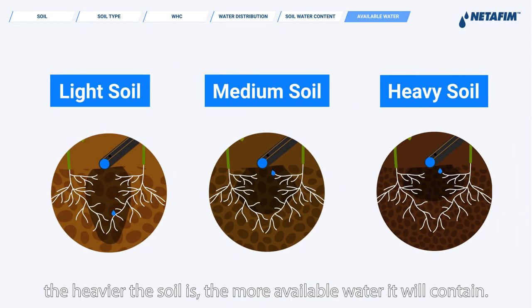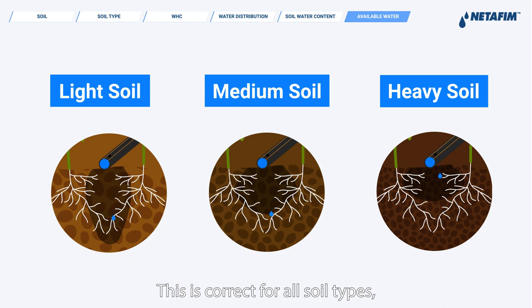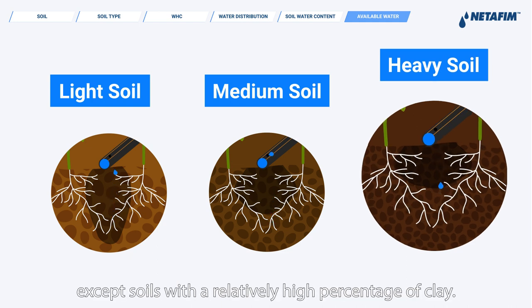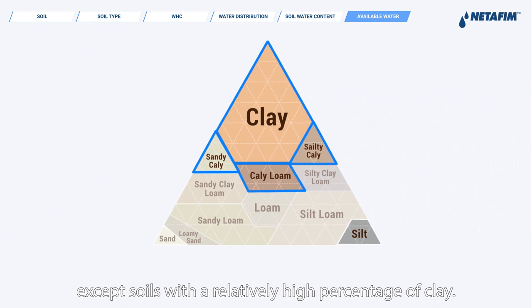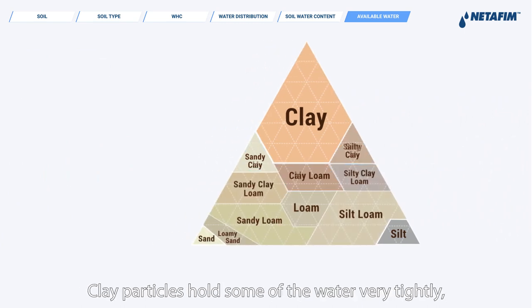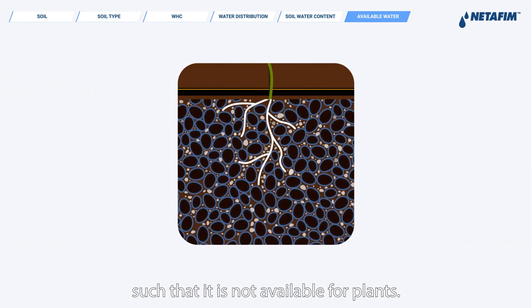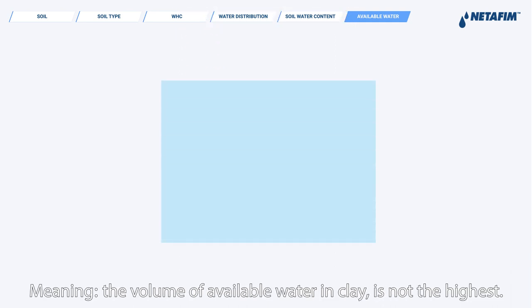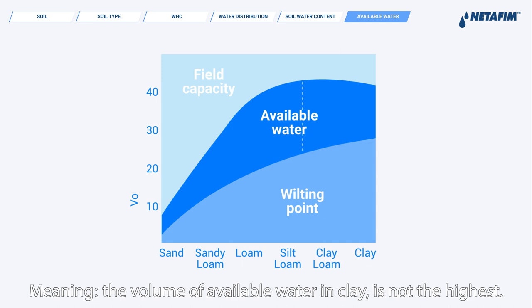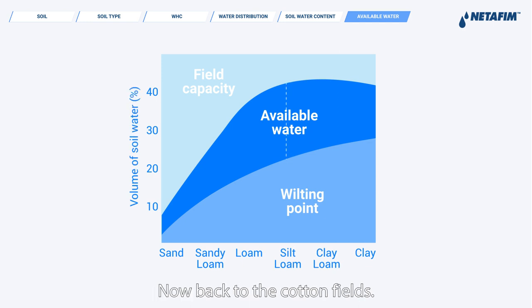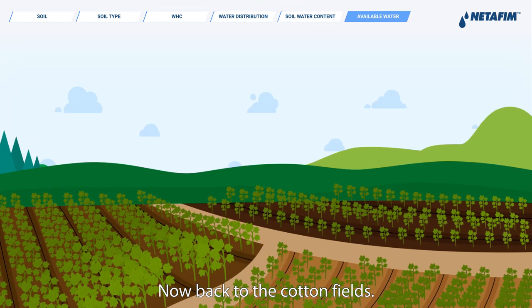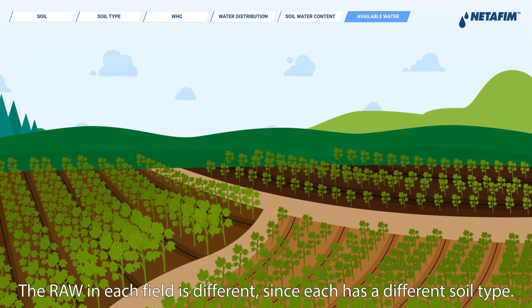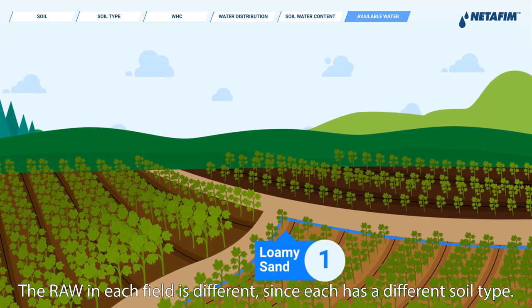As we learned, the heavier the soil, the more available water it will contain. This is correct for all soil types except soils with a relatively high percentage of clay. Clay particles hold some of the water very tightly such that it is not available for plants, meaning the volume of available water in clay is not the highest. Back to the cotton fields — the RAW in each field is different since each has a different soil type.